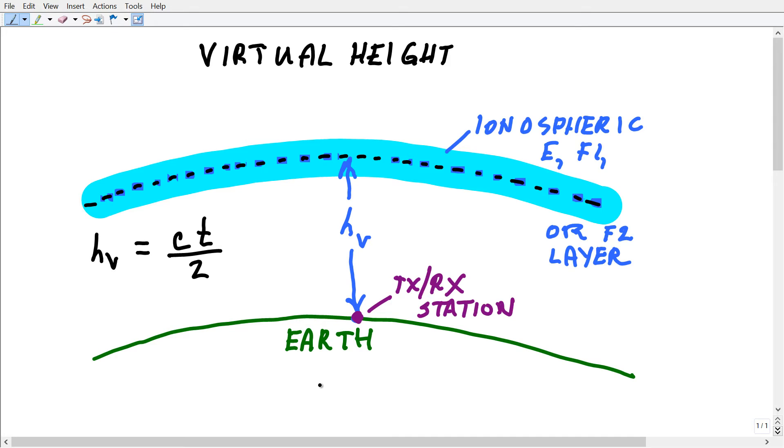If you increase the frequency sufficiently, then the signal is going to pass on into space through the layer. That frequency is determined by the amount of solar activity, the time of day, the frequency itself, and the density of the ionospheric layer, a whole bunch of different variables.